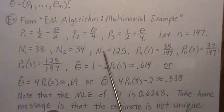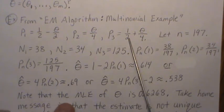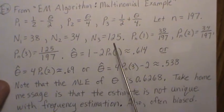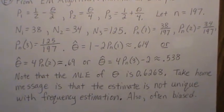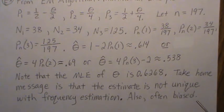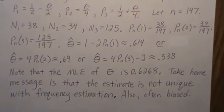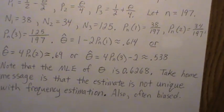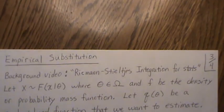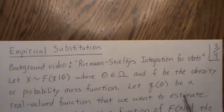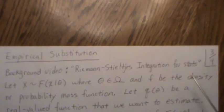For reference, the maximum likelihood estimate of theta in this case is 0.6268. The take-home message is that frequency substitution estimates are not unique and are often biased. That said, frequency substitution is easy to do and often serves as a starting estimate for deeper algorithms, which we'll get into in this parameter estimation playlist.